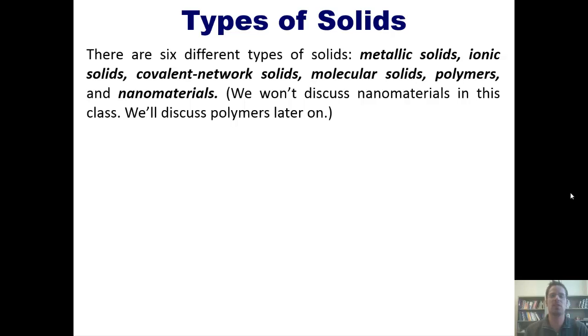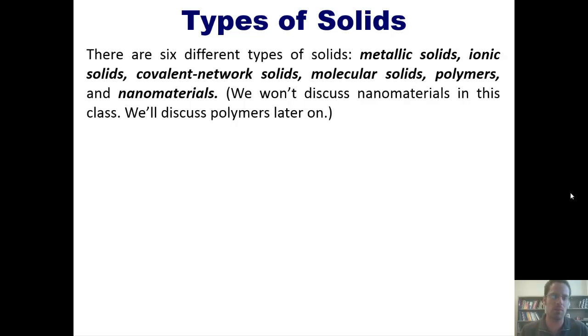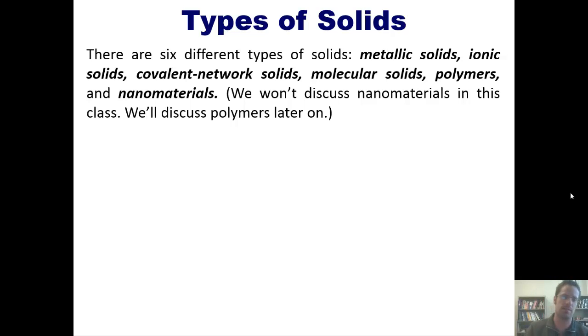There are six different types of solids: metallic solids, ionic solids, covalent network solids, molecular solids, polymers, and nanomaterials. We won't discuss nanomaterials in this class. We'll discuss polymers, however, later on.